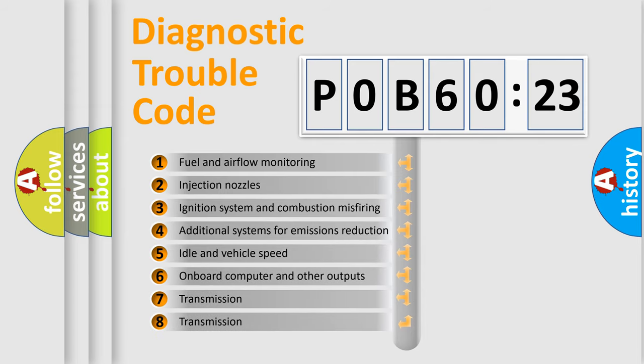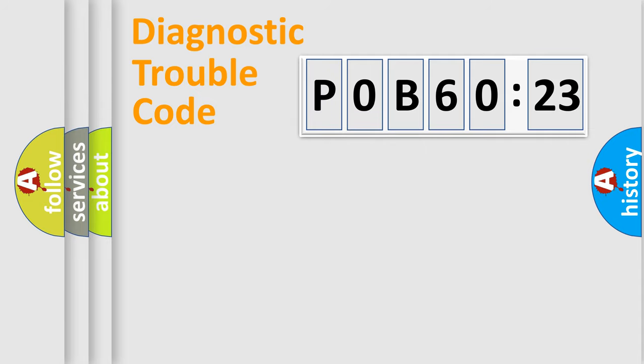The third character specifies a subset of errors. The distribution shown is valid only for the standardized DTC code. Only the last two characters define the specific fault of the group. The add-on to the error code serves to specify the status in more detail.